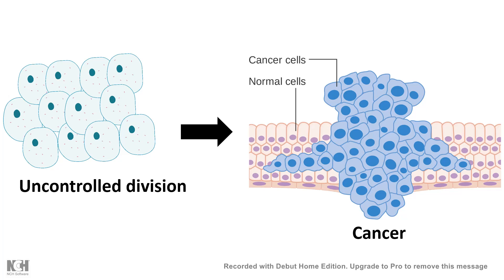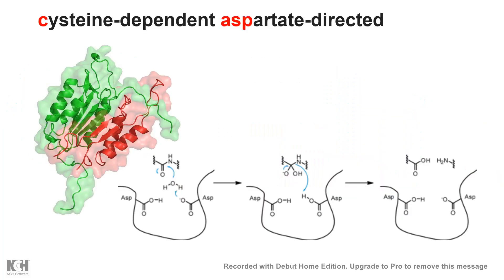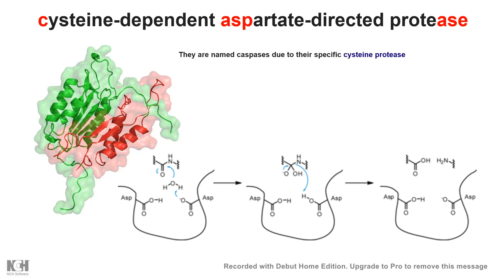That is why learning about apoptosis is so important. Apoptosis is an enzyme-regulated process. The key enzyme that helps in this process is known as caspase. The name is an abbreviation for cysteine-dependent aspartate-directed protease. It belongs to the family of cysteine proteases, and it also cleaves after the aspartate residue in the target protein.